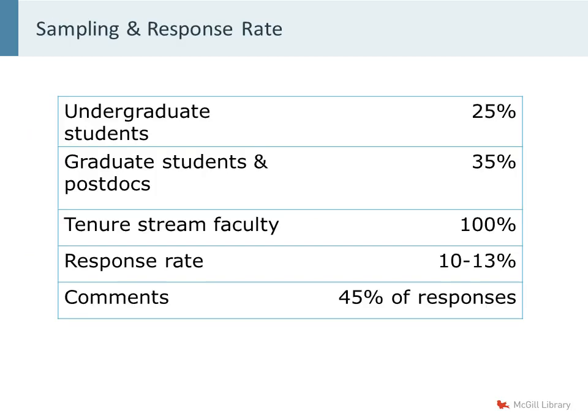The typical sampling method we use: we run the survey quite frequently but don't send it out to all of our students. We send it to a sample of undergraduate and graduate students and to all tenure stream faculty. On a given year, for each of these groups, we get a response rate of about 10 to 13%. We send out the survey to about 10,000 members of the McGill community. The response rate in 2013 was therefore about 1,200 responses, and 45% of those respondents left a comment — meaning over 500 written comments of various lengths to deal with.